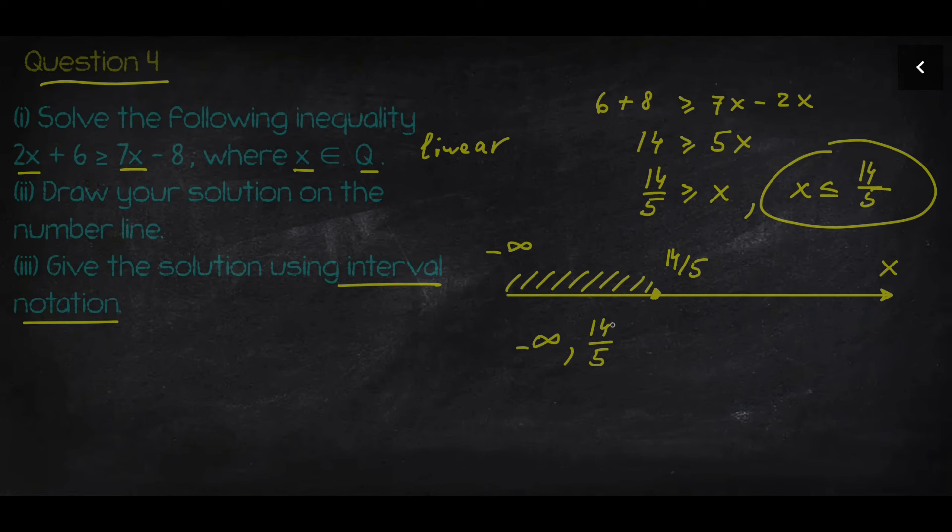It goes from negative infinity to the number 14 over 5. This is the right edge or the right boundary. I put square brackets because I'll include that. Otherwise, I will use round brackets.